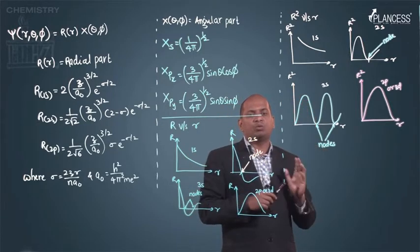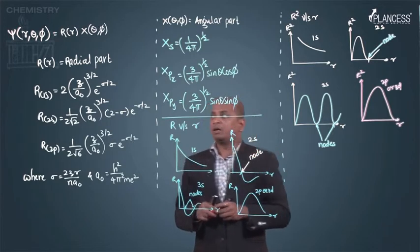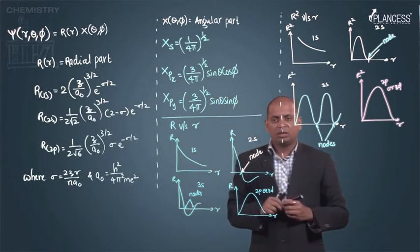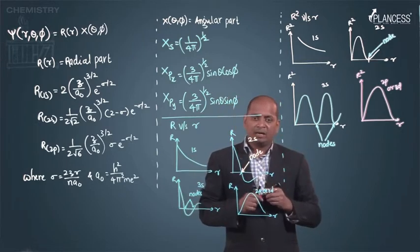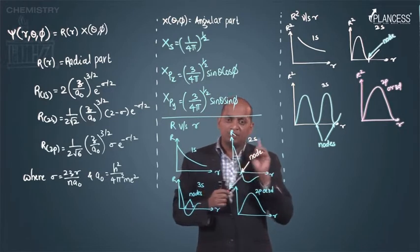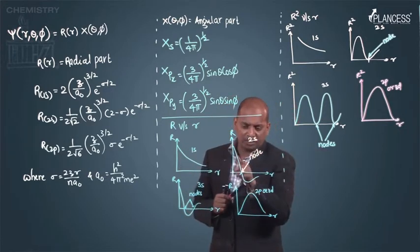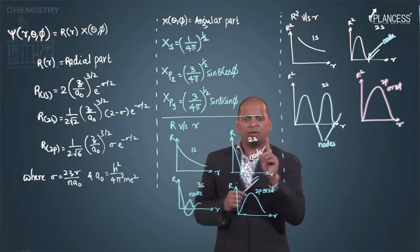Then we need to find out nodes, radial nodes. How many radial nodes in a 2s orbital? We have calculated that. If I am talking about 2s orbital, it has 1 node, so it should cut the x-axis at only 1 point.